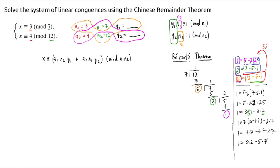Or 1 equals 3 times 12 minus 5 times 7. So this is our linear combination in Bezout's theorem. And what this tells us, remember, 1 equals 3 times 12 minus 5 times 7.